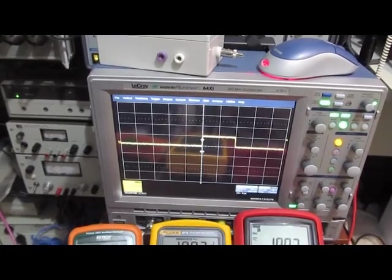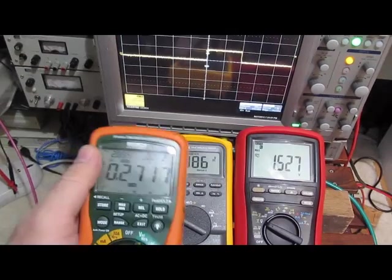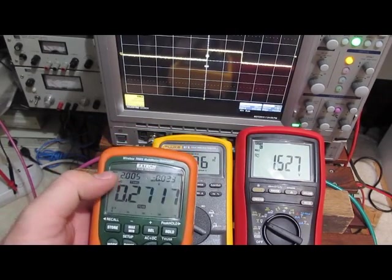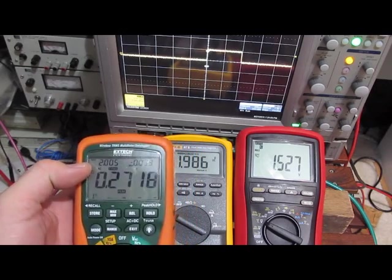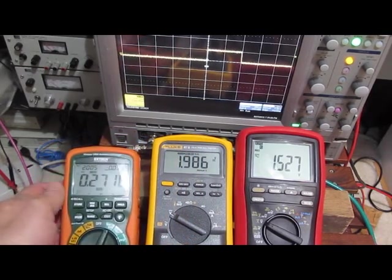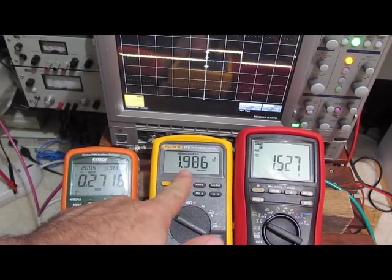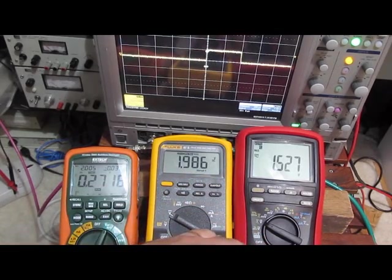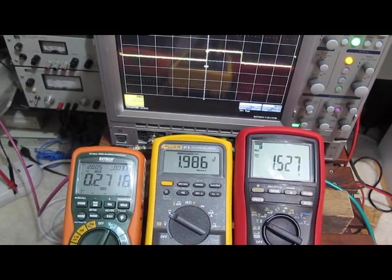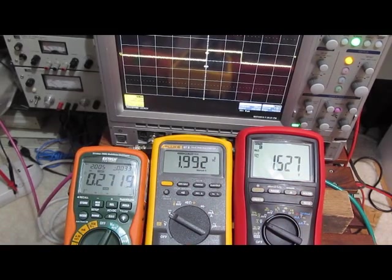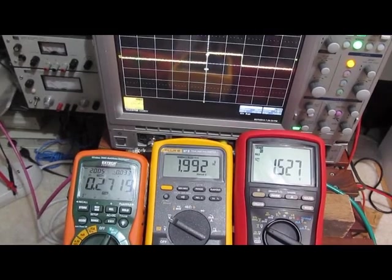So we'll go ahead and shorten the pulse width down a little further. So this is currently a 400 microsecond pulse width. So here again, we can see the X-TEC, 2.005. The Fluke, 1.986. And the Brymen is now 1.527.